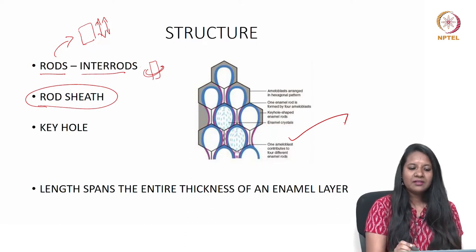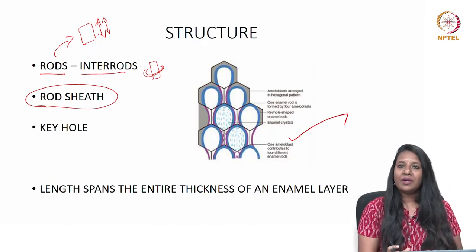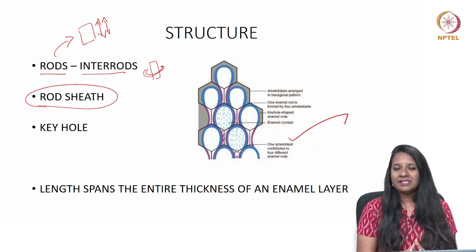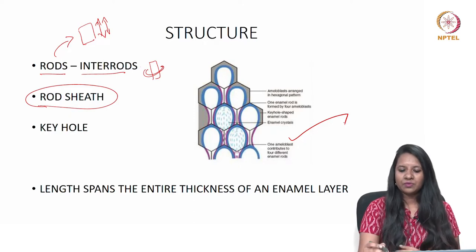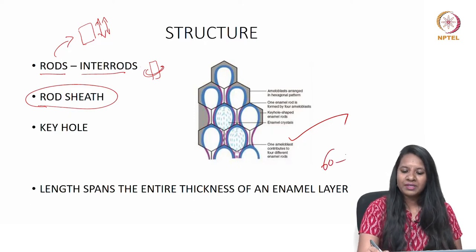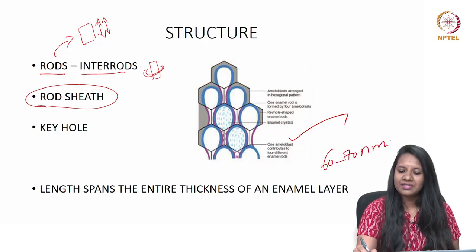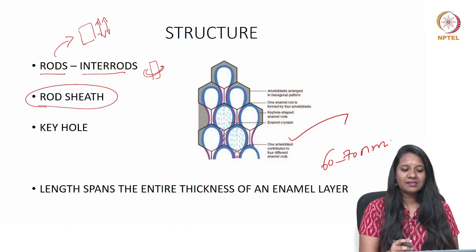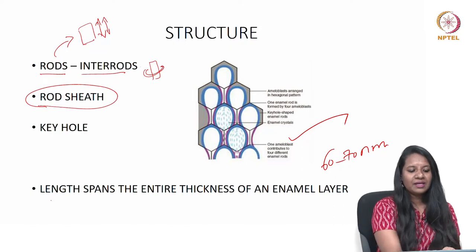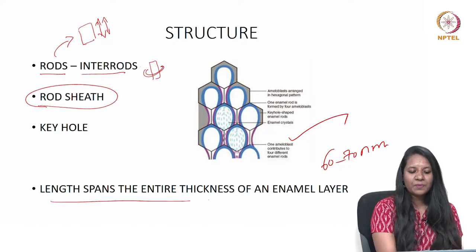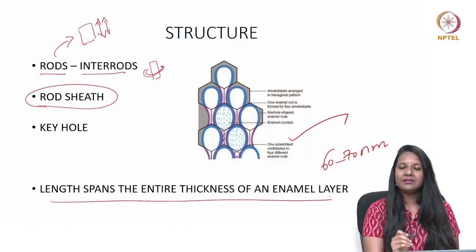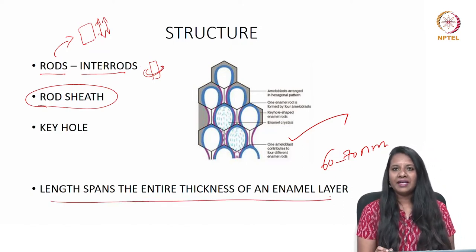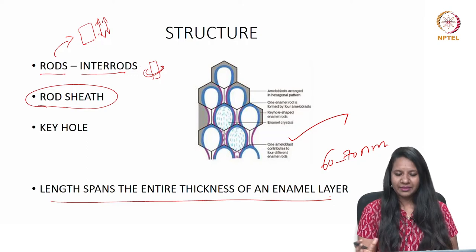Enamel comprises long ribbon-like crystals which are 60 to 70 nanometers in width, and the length spans the entire thickness of the enamel layer.